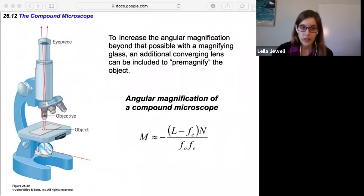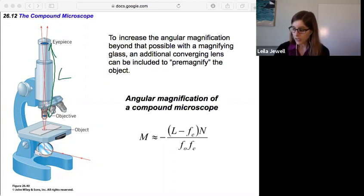Now we can apply this to some other things. 26.12 looks at the compound microscope. To increase the angular magnification beyond that possible with just a magnifying glass, you can add an additional converging lens to pre-magnify the object. So if we have the object, the objective can make it a little bit bigger before it passes into the eyepiece. And there's this equation where the magnification is negative L minus the focal length of the eyepiece (f_e) times the near point N, divided by the focal length of the objective and divided by the focal length of the eyepiece, where this capital L is the distance from one lens to the other. That's something that's specified in the problems.